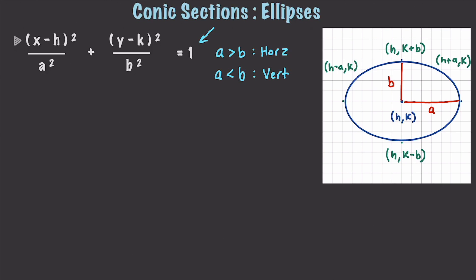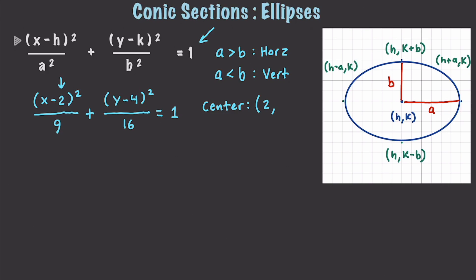Now I want to show you how to graph an ellipse in standard form. So let's say we have (x minus 2) squared divided by 9 plus (y minus 4) squared divided by 16, equal to 1. Based on this, I know the center point is going to be (2, 4). Then I find the value of a: the square root of 16, which equals 4. I now have everything I need to graph the ellipse.